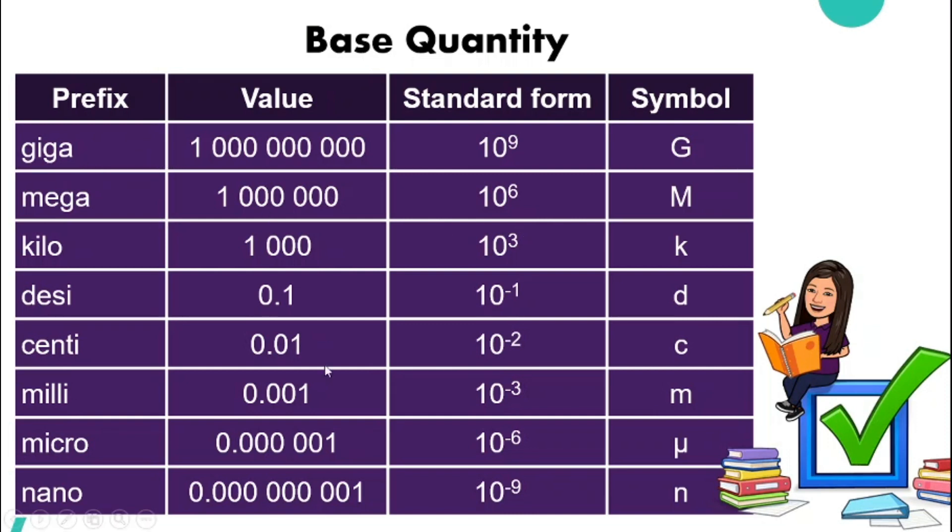I will teach you how do we interpret this table. Giga means 10 to the power of 9, the standard form. 10 to the power of 9 means there are 9 zeros behind the 1. So we have 9 zeros here. And we can use the symbol capital G. So that's how we interpret this table, which you can actually also find it in your textbook in page 16.